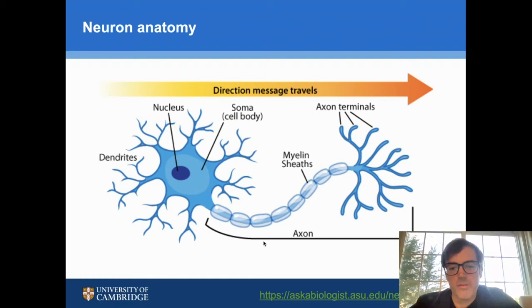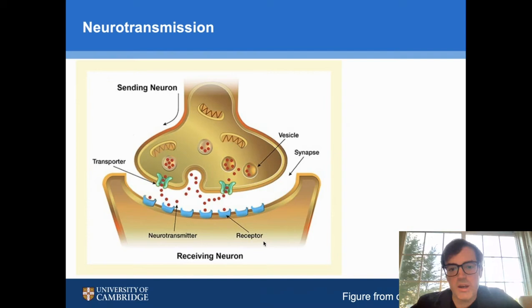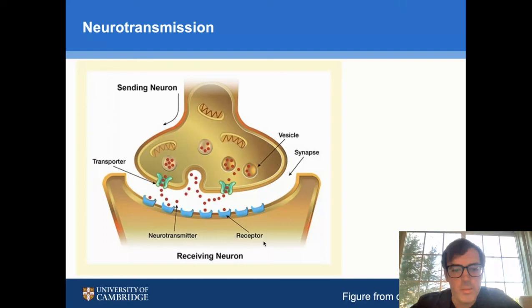Just so everyone is on the same page, this is the basic anatomy of a neuron. On the left is the cell body, and a message is sent from left to the right side of the screen through what's called an axon, insulated by something called myelin, ultimately ending up at the axon terminals on the right. This is zoomed in to an axon terminal. The sending neuron is on top. The axon terminal is spitting out these red dots, which are neurotransmitters, which then bind to the blue things on the bottom in a receiving neuron called receptors. The space between is called a synapse, as you may be familiar with.